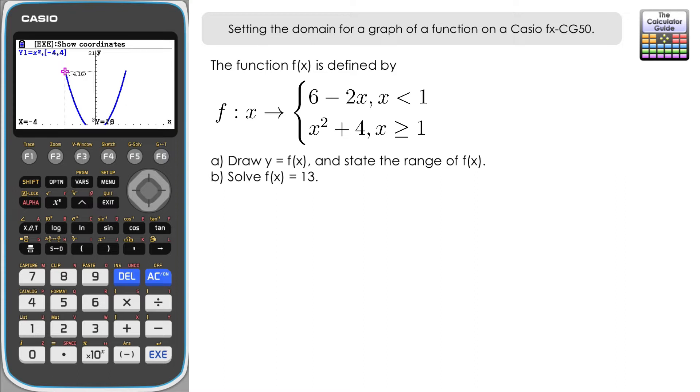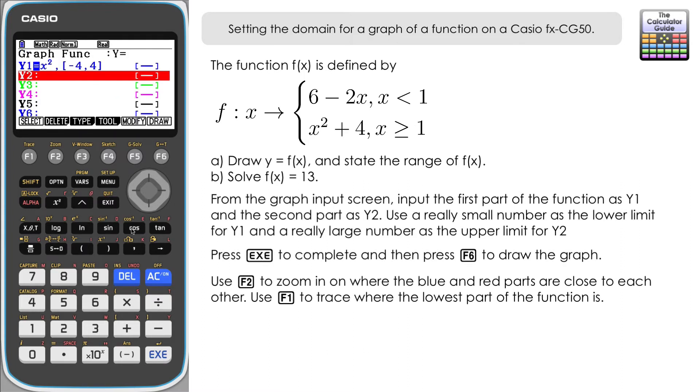Now I'm going to draw these as two separate graphs because that's probably the easiest way to do it. Let's delete off the x squared function there and we'll start with the topmost of the two pieces of the function that we have there. So 6 minus 2x and then we need to define the domain.